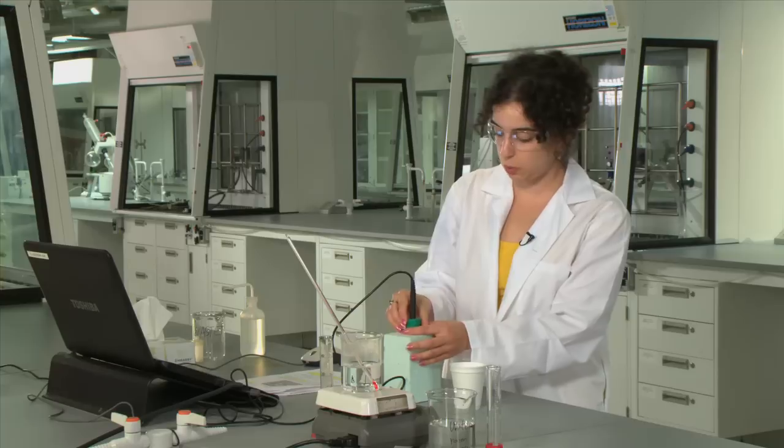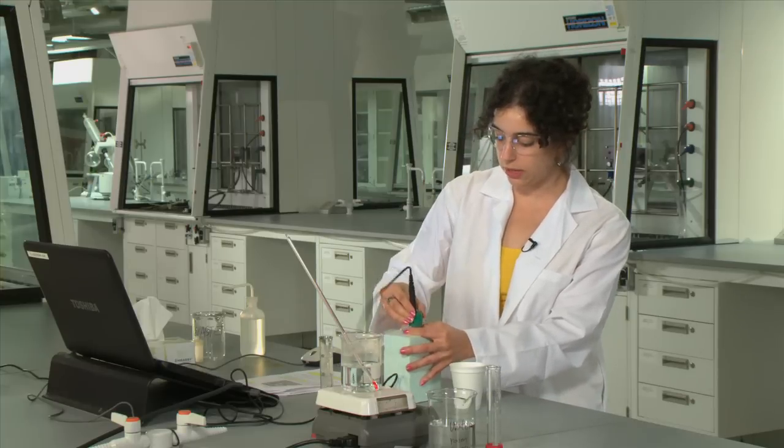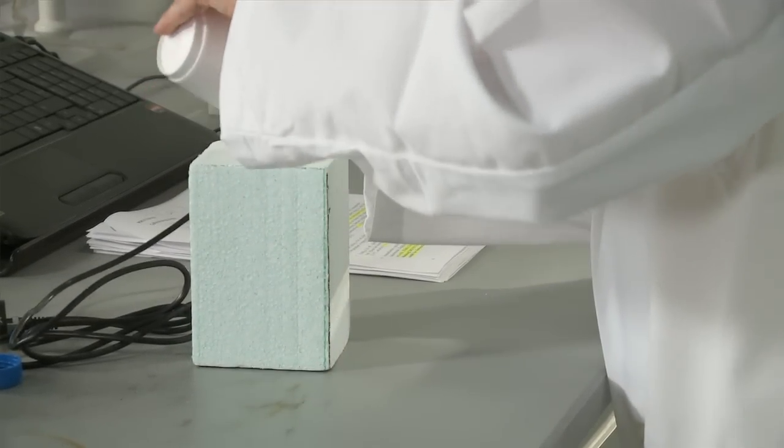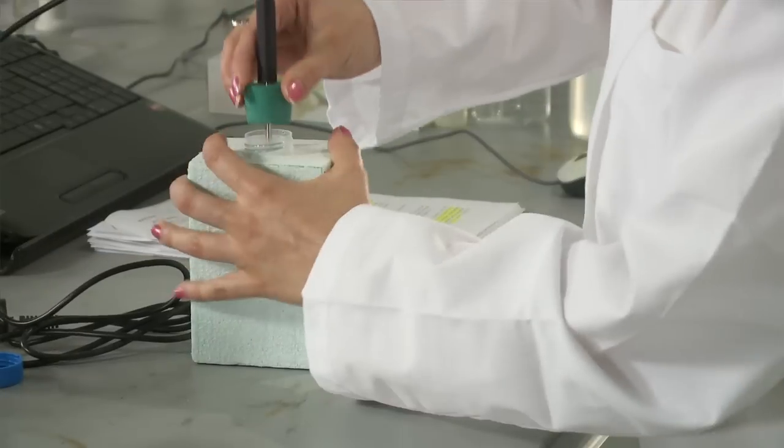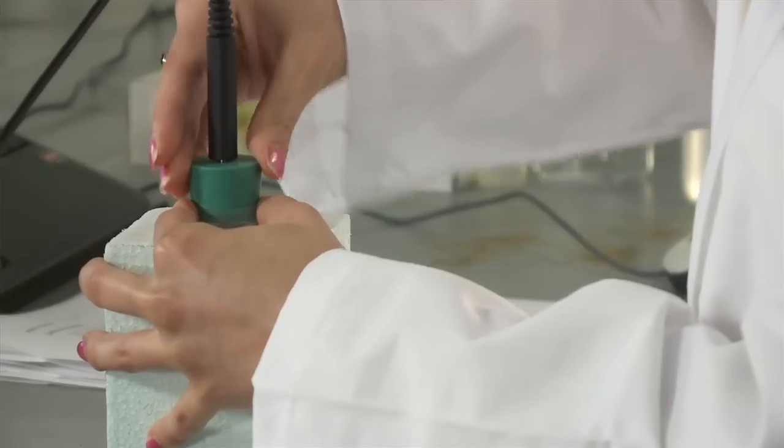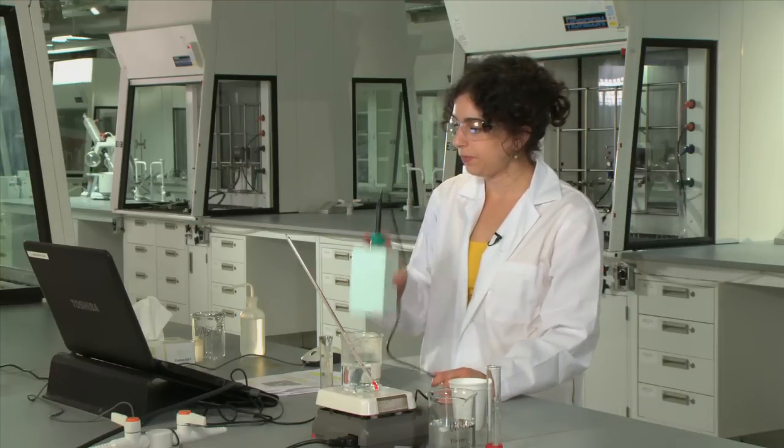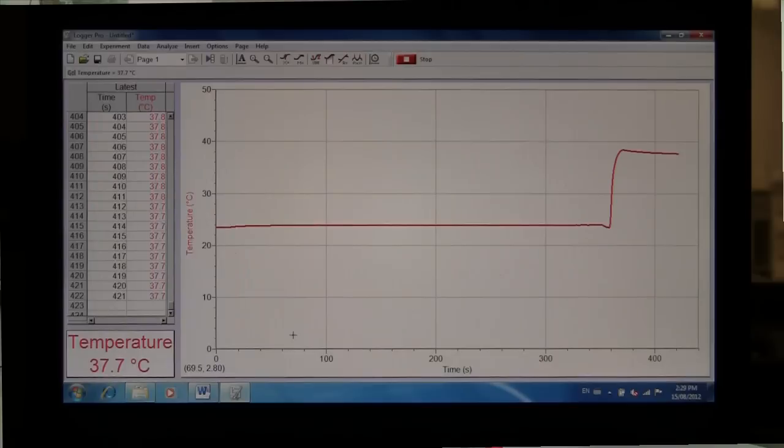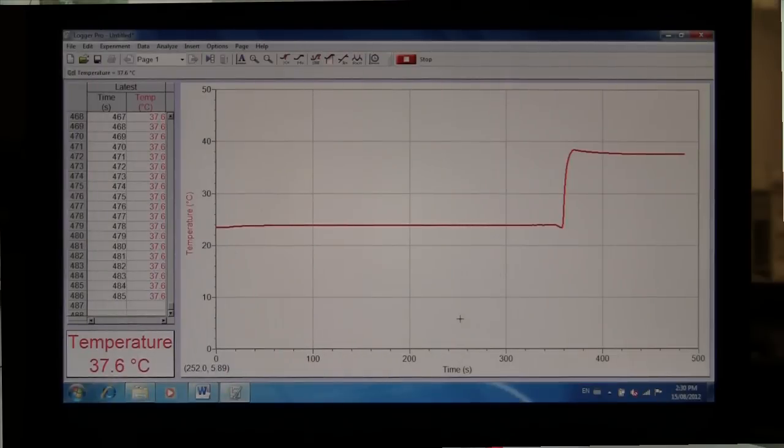And then immediately pour this water into your calorimeter again holding the calorimeter by the top of the tube, transferring this as fast as you can without spilling. Place the stopper and start counting 60 seconds. And then again you'll let it stand for 100 seconds just to allow the temperature to stabilize. Once 100 seconds have passed you'll record the temperature that is being measured, make sure that you write this down in your lab notebook and then you can click stop.